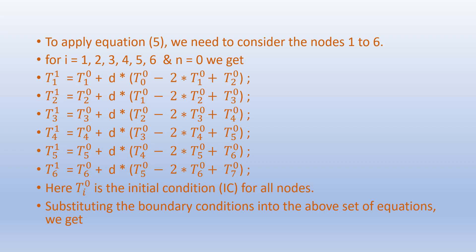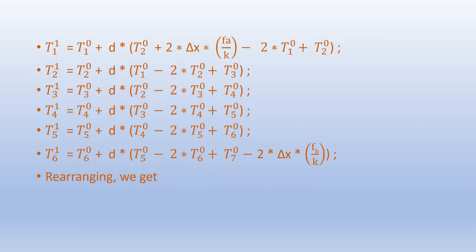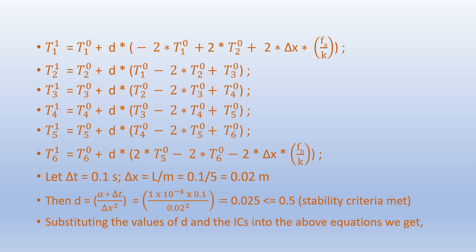To apply the FTCS equation we consider all nodes 1 through 6. Applying that equation for all these nodes we get a set of algebraic equations, where T_i^0 is the initial condition for all nodes. We then substitute the boundary conditions derived earlier into this set of equations, and after rearranging we get the complete set of equations as shown.